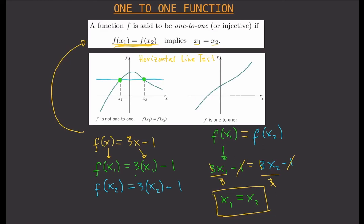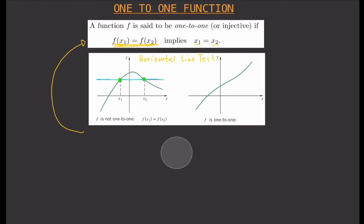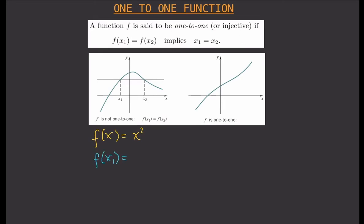Now let me give an example of a function that is not 1-to-1: f(x) = x². Our f(x₁) = x₁², and our f(x₂) = x₂². Now let's equate f(x₁) and f(x₂), giving us x₁² = x₂².